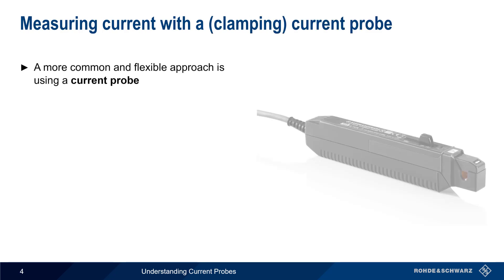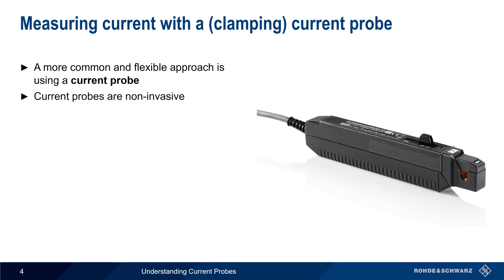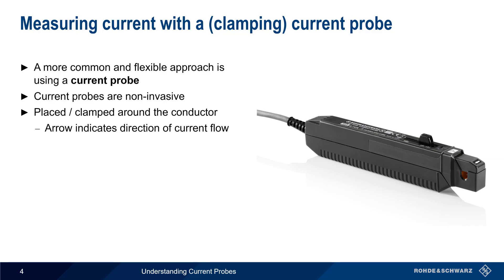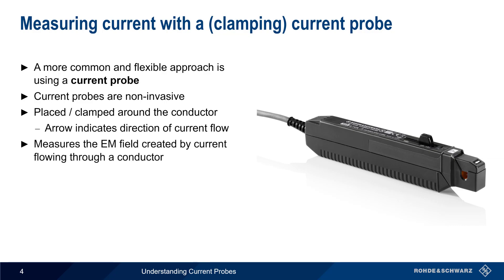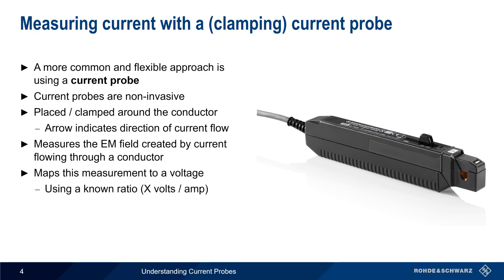A more common, and in many ways more flexible approach, is using a special current probe. Current probes are a non-invasive way of measuring current — there is no need to break the circuit. These probes are placed or clamped around the current-carrying conductor, with an arrow marker indicating the direction of current flow. Current probes work by measuring the electromagnetic field created by a current flowing through a conductor, and then mapping this to a voltage using a known ratio of volts per amp.